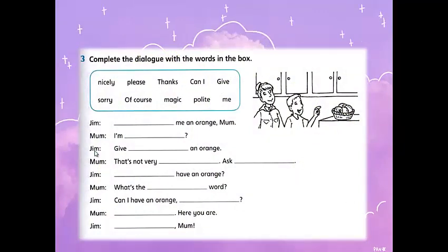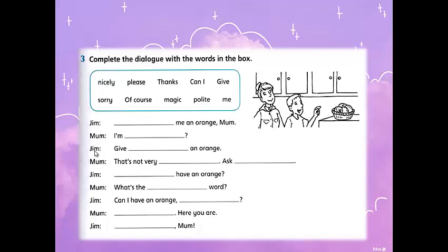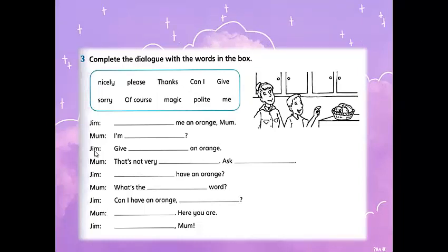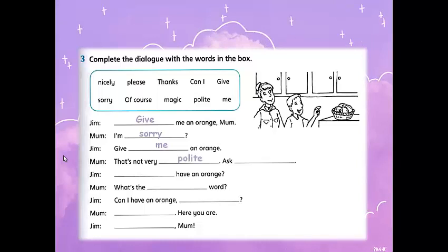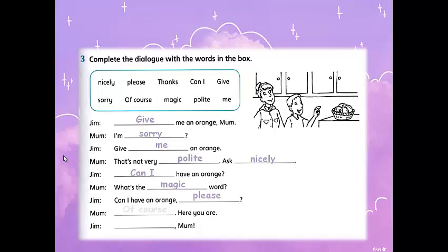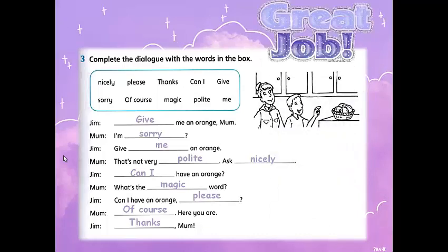Last exercise: complete the dialogue with the words in the box. The words are: nicely, please, thanks, can I, give, sorry, of course, magic, blight, and may. The dialogue goes — Gem: 'Give me an orange, Mom.' Mom: 'I'm sorry Gem, that's not very polite. Ask nicely.' Gem: 'Can I have an orange, Mom?' Mom: 'Of course, here you are.' I hope that all of your answers are right!